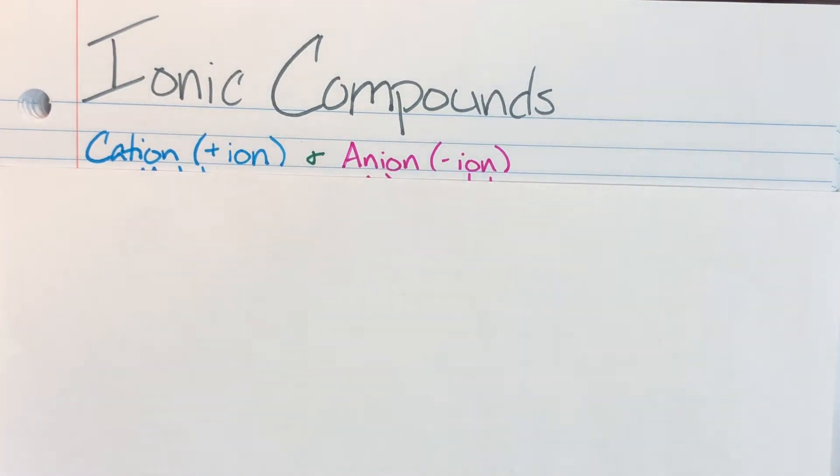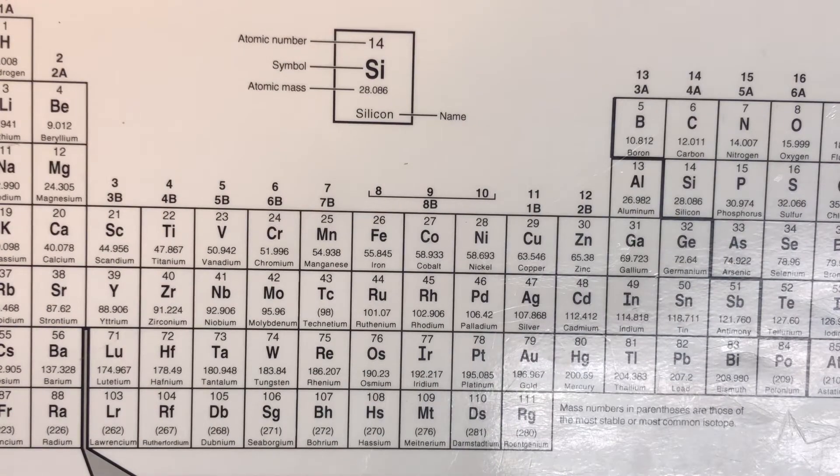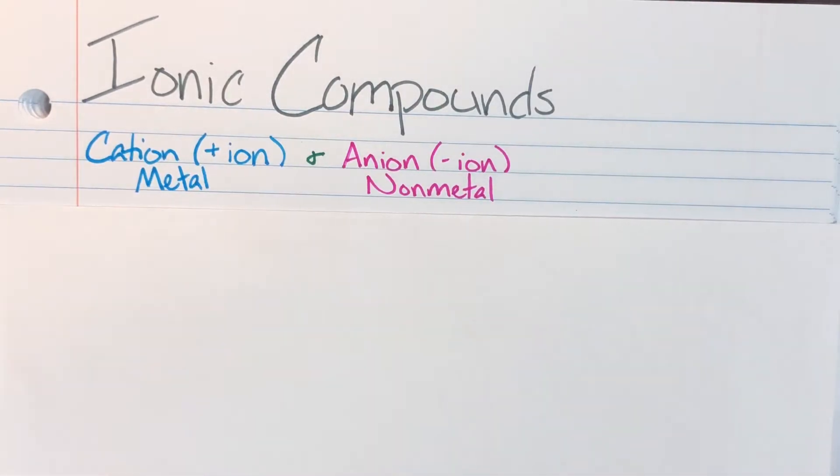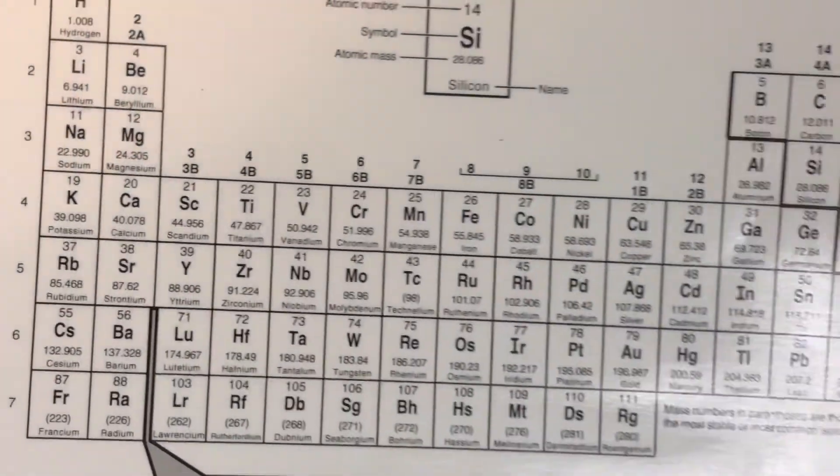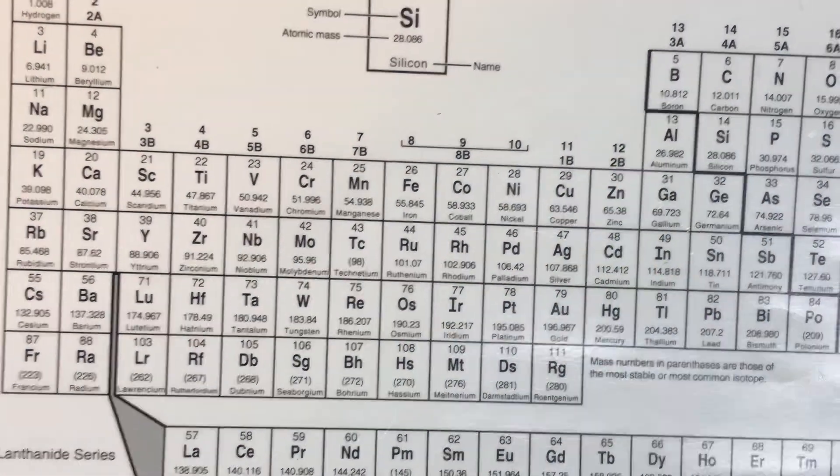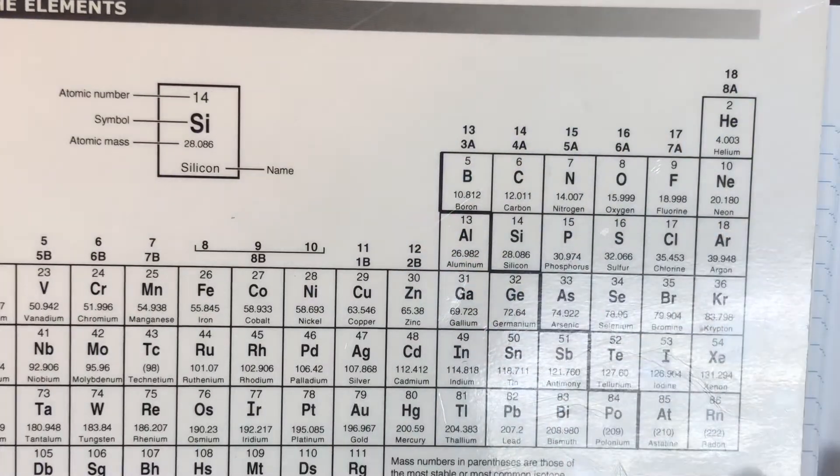In general, whenever we look at the periodic table and we're trying to figure out whether or not something is going to be a cation or an anion, a good rule of thumb is that my cations are going to be my metals and my anions are going to be my non-metals. Now remember that my metals are going to be anything to the left of this staircase line and my non-metals are going to be anything to the right.